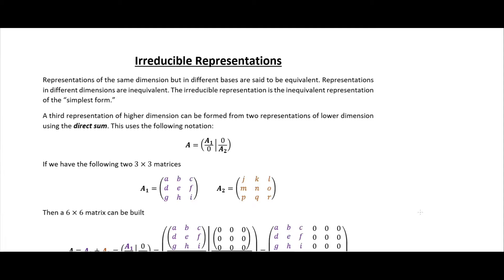In this video I'm going to introduce an idea that we're going to be following for the next few videos, which is how to find the irreducible representations. If we have a reducible representation, how do we find the irreducible representation? Essentially what we're going to be doing is taking a matrix with all its different entries and transforming it until it's in a form with entries only in blocks, so everything else would be zero — we want to block-diagonalize it.